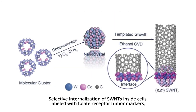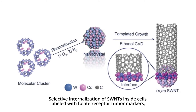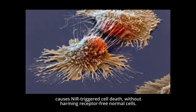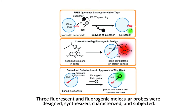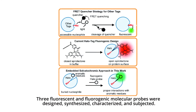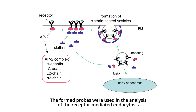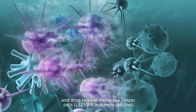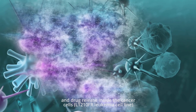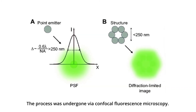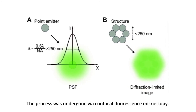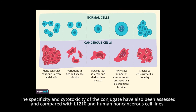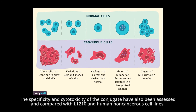The functionalization of SWNTs can achieve selective cancer cell destruction. Selective internalization of SWNTs inside cells labeled with folate receptor tumor markers causes NIR-triggered cell death without harming receptor-free normal cells. Three fluorescent and fluorogenic molecular probes were designed, synthesized, characterized, and evaluated. These probes were used in analysis of receptor-mediated endocytosis and drug release inside the cancer cells via confocal fluorescence microscopy. The specificity and cytotoxicity of the conjugate have also been assessed and compared with L1-210 and human non-cancerous cell lines.